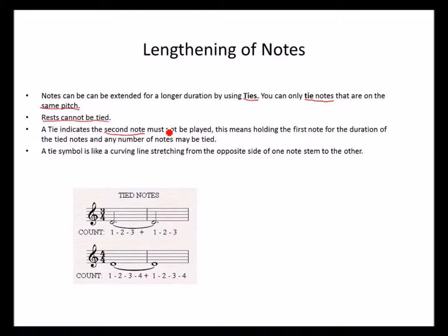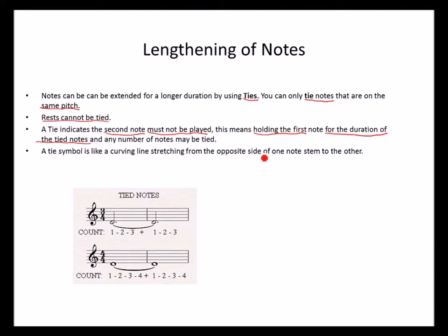The second note must not be played, meaning that you hold the first note for the duration of the tied notes, and any number of notes can be tied. A tie symbol is like a curving line stretching from one note to the other.